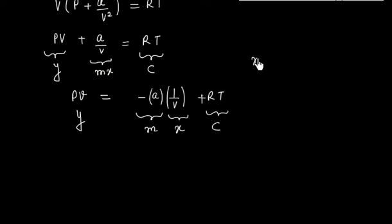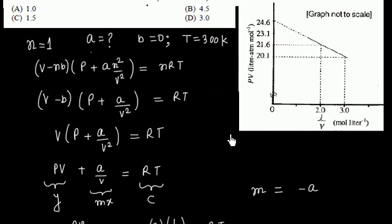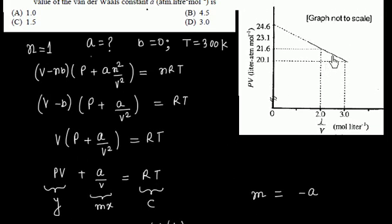Now in this case M is equal to minus A, that is slope. Now let us find M from here. So if you see we can also find M from this diagram.